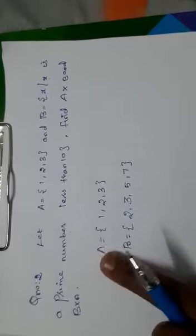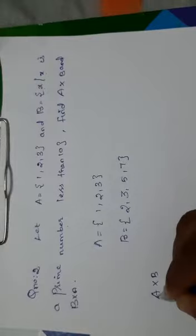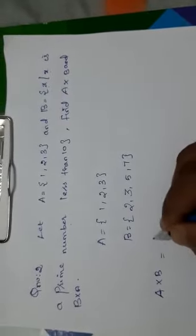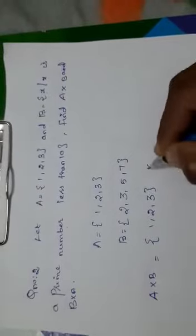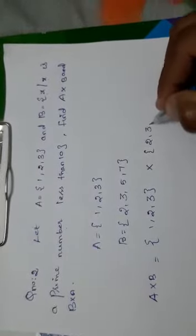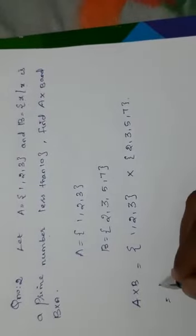So now we know what is A and what is B. Now we will find the Cartesian product, that is A cross B equals 1, 2, 3 cross product 2, 3, 5, 7. How to write the cross product children?